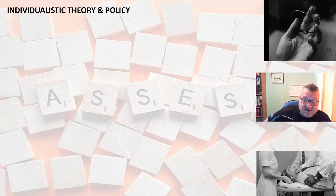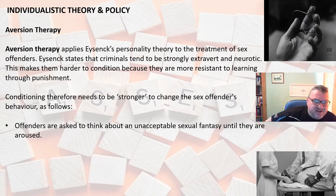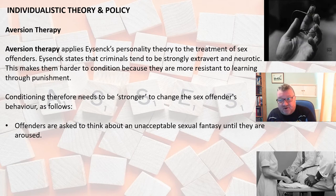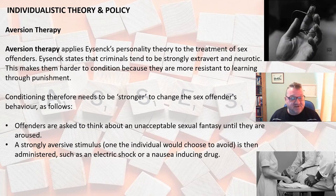Moving on to aversion therapy, which is probably linked to Eysenck's personality theory. It's been used for the treatment of sex offenders and also for alcoholism. Eysenck said criminals tend to be strongly extrovert and neurotic, making them harder to condition — more resistant to learning through punishment. So your conditioning needs to be stronger to change, for example, a sex offender's behaviour.